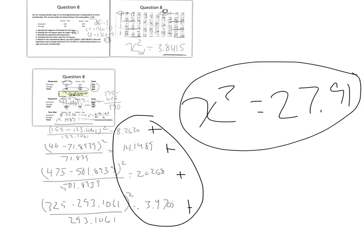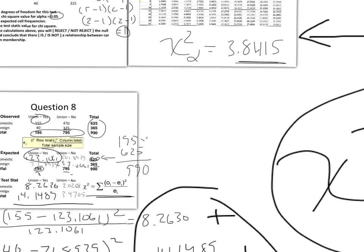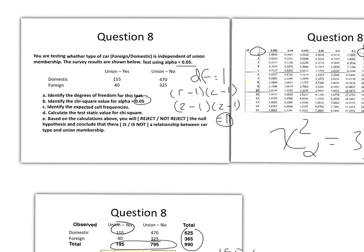Now 27.91 is quite a bit bigger than 3.8415, and so let's take a look then at our problem back to our original questions here. Because our test statistic was much larger than our chi-square of alpha, we will reject the null and conclude that there is a relationship between car type and union membership. What type of car domestic or foreign is connected with union membership. In this case more union members are driving domestic cars than foreign cars. That's how you would interpret that result.